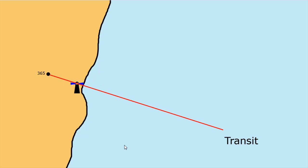Another type of position line is called a transit. The transit is where two known objects line up and you can see those objects lined up. So if you're out on the sea and you can see this lighthouse is aligned with this hill, then your position is somewhere on this line. You don't know exactly where you are on the line, but you know you are on the line, and you can draw that as a position line on your chart.